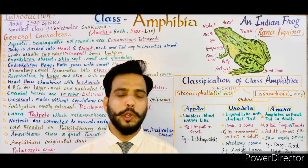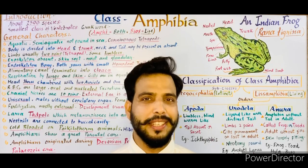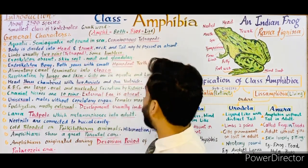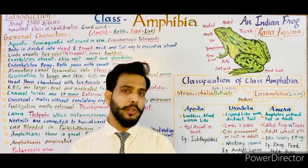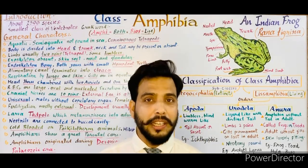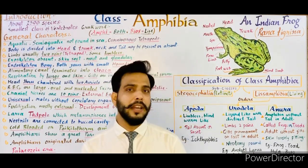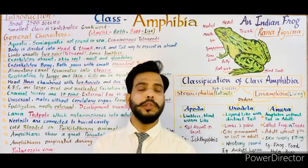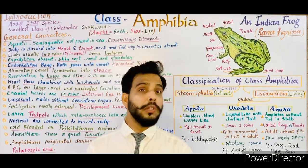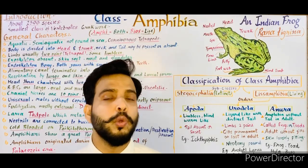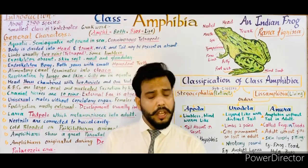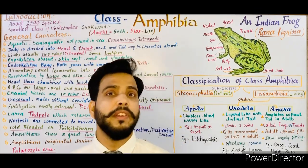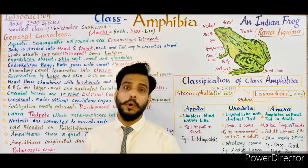Good morning students, my name is Vijay Gupta and you are watching biology classes. Today we are going to talk about class Amphibia. As described in earlier videos, phylum Chordata is subdivided into two superclasses. The first superclass was Pisces, covered in the last video. Now we study the second superclass, Tetrapoda, meaning animals with two pairs of limbs — those which have four limbs.